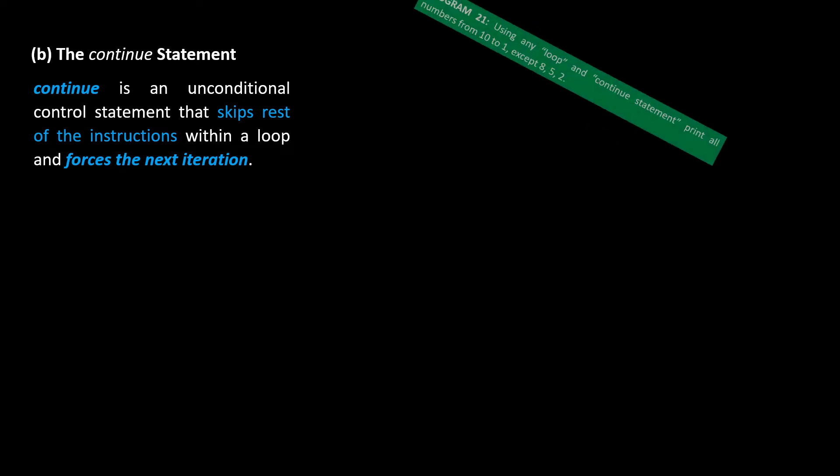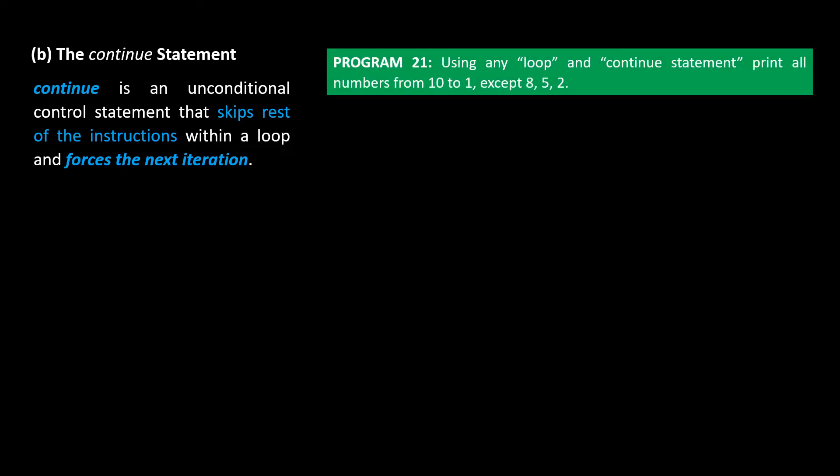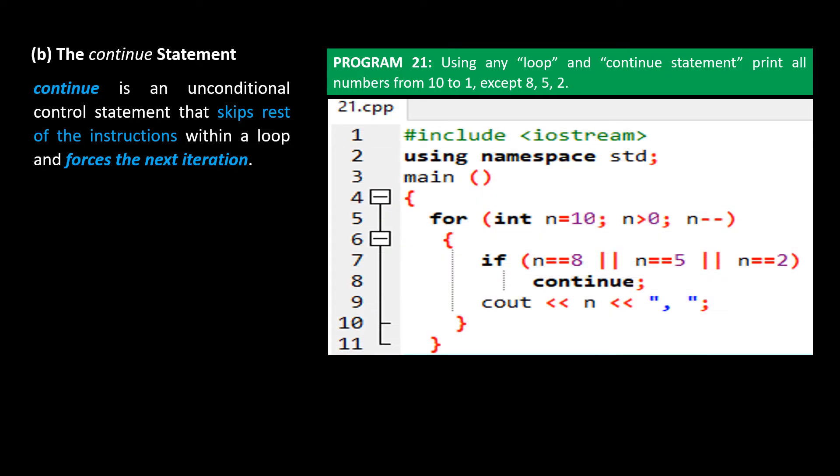Using any loop and the continue statement, print all numbers from 10 to 1, except 8, 5, and 2. You can try your own program logic. I have here the code for you, and this is the output. Once again, it's for you to track down how the program works.